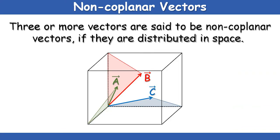Now, non-co-planar vectors — the name itself indicates these are vectors which are in different planes. For example, vector C is in the horizontal plane, and vector B is inclined, so it is in a different plane. C and A are also in different planes. Therefore, they are non-co-planar vectors.